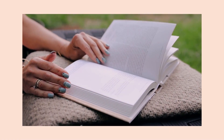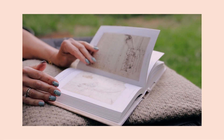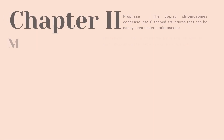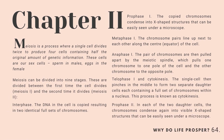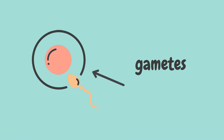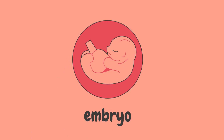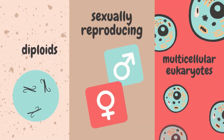Now, do you believe us on how significant mitosis is? We should have persuaded you by now, because we're moving on to our next chapter on why life prospers. For meiosis, it is the process by which sexually reproducing organisms generate gametes, or sex cells, which is an essential precondition for the normal formation of the embryo.